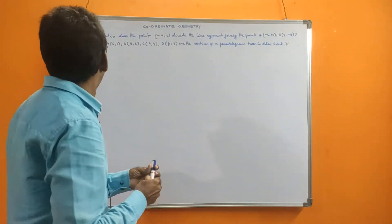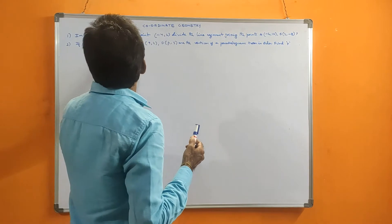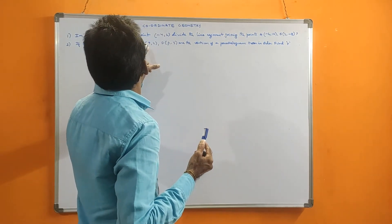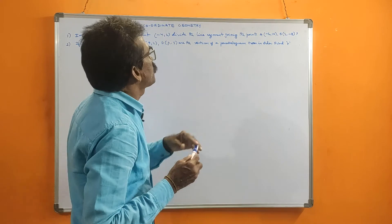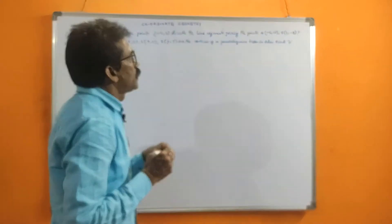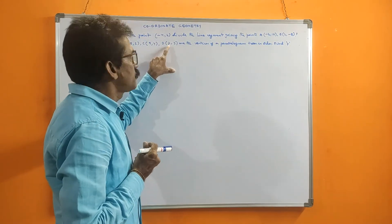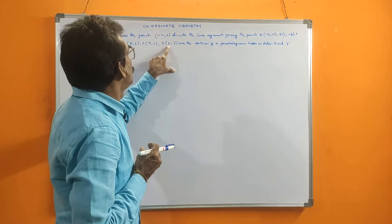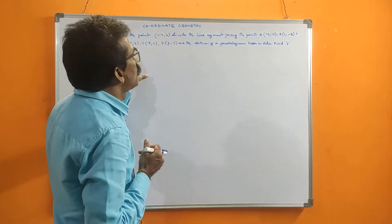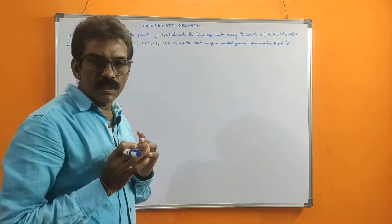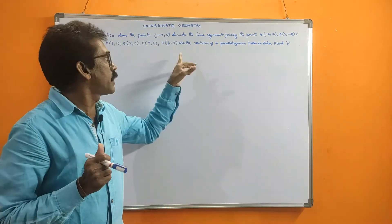The next problem is: if the points A(6,1), B(8,2), C(9,4), D(P,3) are the vertices of a parallelogram taken in order, find P. In one of the points the variable P is given, but these are vertices of a parallelogram. So, using parallelogram properties, we should find out the value of P.